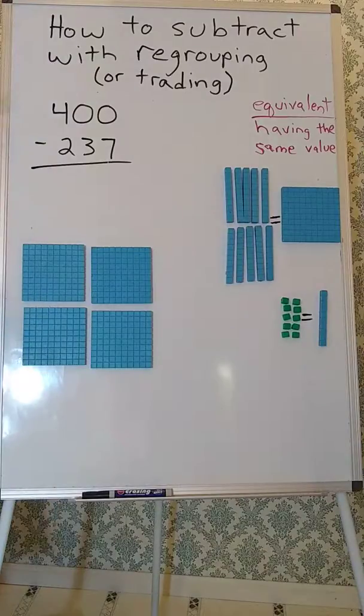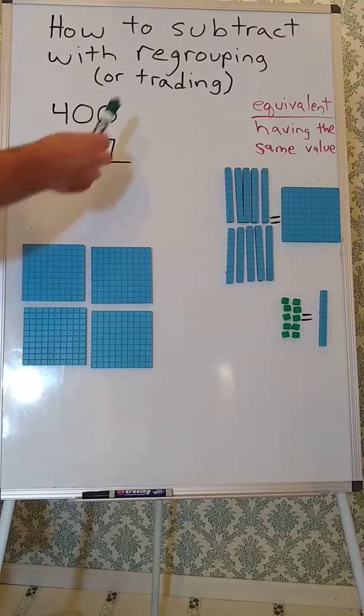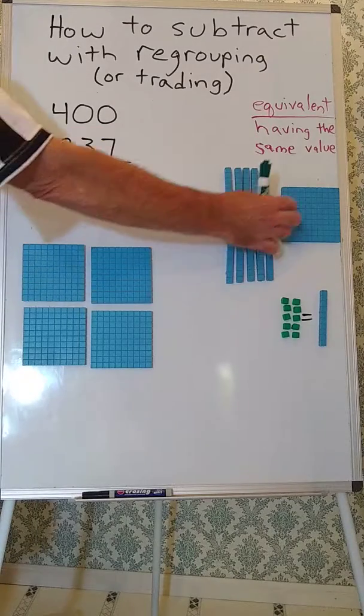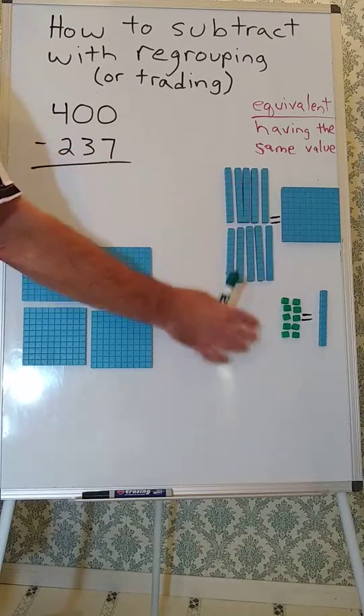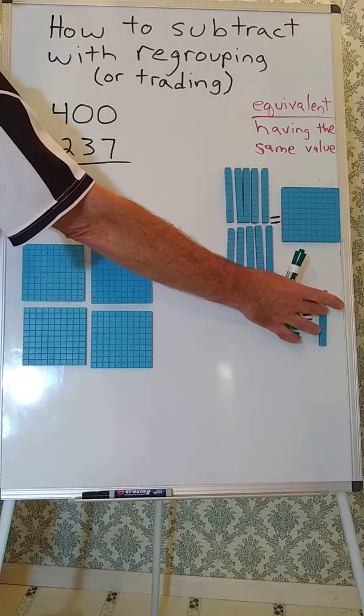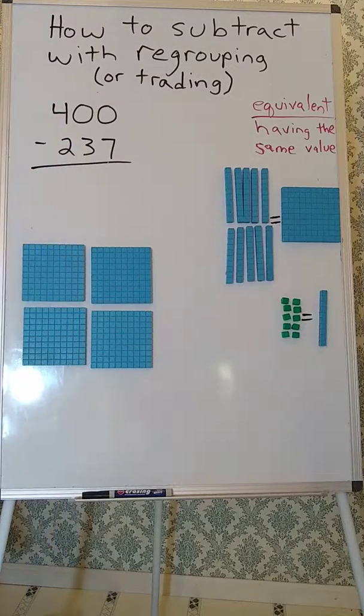So in this problem, if we don't have enough of something, we can keep in mind the idea of equivalent and we can trade a 100 for 10 tens or 10 tens for a 100. And we can trade a 10 for 10 ones or 10 ones for a 10, depending on the situation.